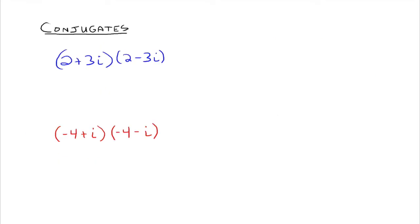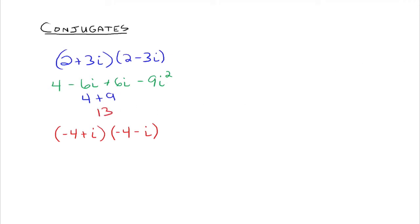What if you multiply conjugates together? If you multiply 2 plus 3i times 2 minus 3i — those are conjugates — multiplying out using the distributive property twice gives 4 minus 6i plus 6i minus 9i squared. The 6i's have opposite signs so they disappear, and i squared is the same thing as negative 1, so negative 9 times negative 1 gives us 4 plus 9. This is just a fancy way to write the number 13 — these two conjugates multiply out to give the real number 13, with imaginary part 0.